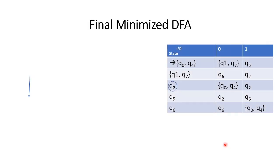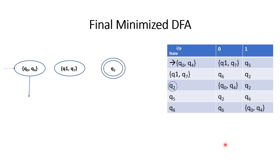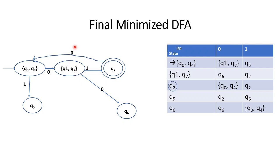Final minimized DFA transition table: Q0,Q4 on 0 goes to Q1,Q7; on 1 goes to Q1,Q5. Q1,Q7 on 0 goes to Q6; on 1 goes to Q2. Q2 on 0 goes to Q0,Q4. Q5 on 0 goes to Q2. Q6 on 0 goes to Q0,Q4. This is the final minimized DFA.